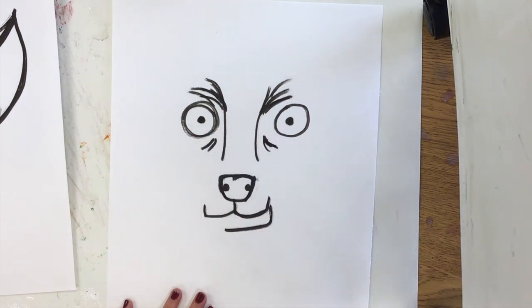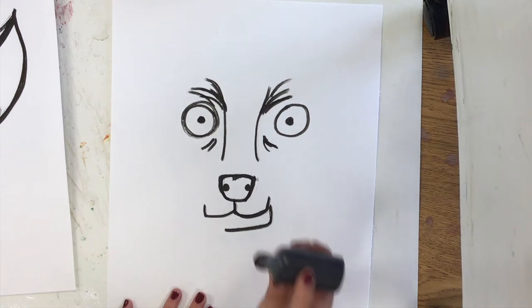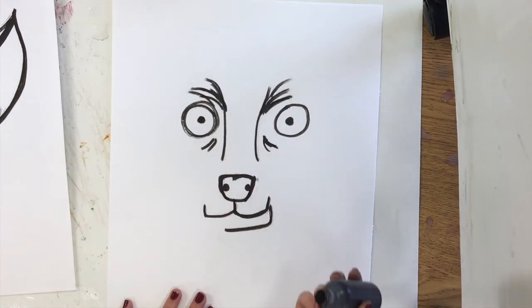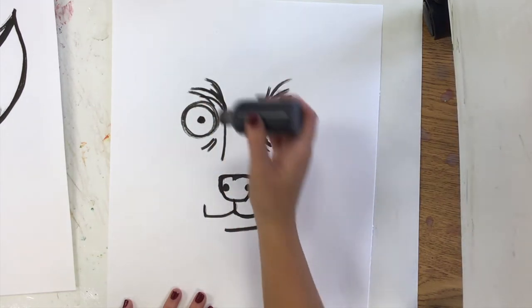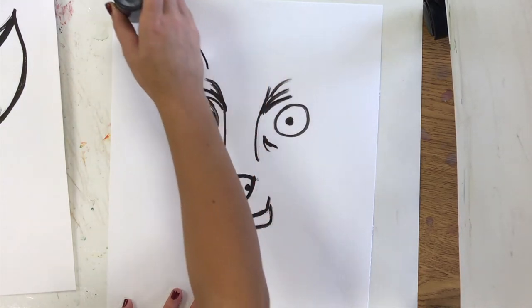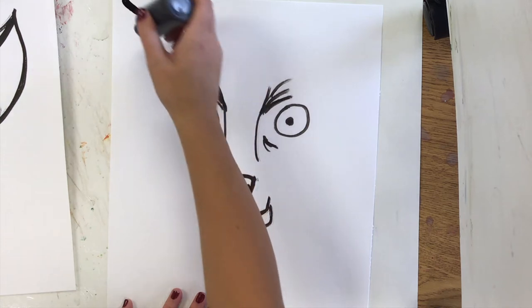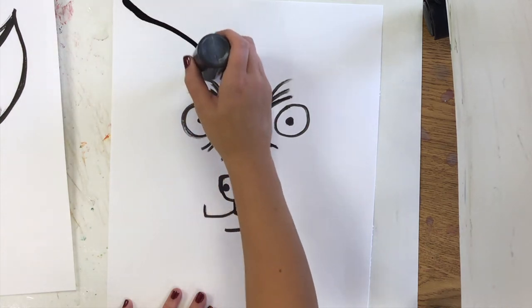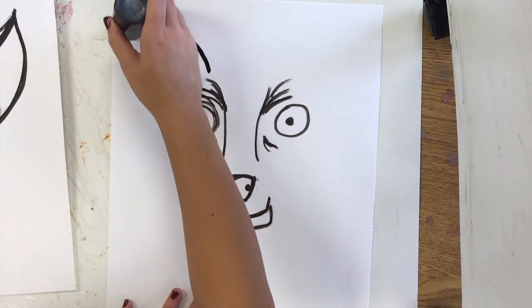Now next, I'm going to be drawing my chihuahua's nice big ears. They have really big triangle-shaped ears. So I'm going to curve up, and this shape reminds me of a leaf almost.